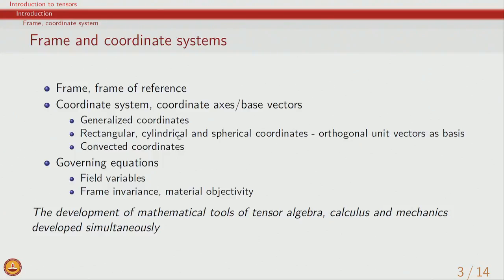For engineering and scientific problems, we typically have a geometry in mind, so more often than not we use rectangular, cylindrical, or spherical coordinate systems. In each case, three orthogonal unit vectors form the basis of these coordinate systems. For example, we have coordinate axes x, y, z in rectangular coordinates, or r, θ, φ in spherical. Given a frame of reference and a coordinate system of choice, we can then write down the governing equations in more detail.